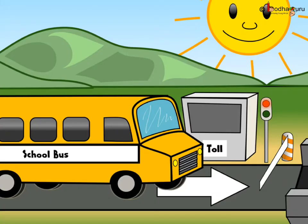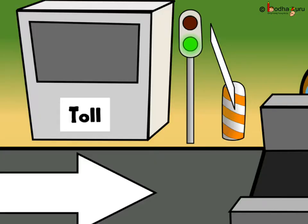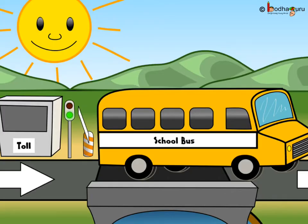Just see the gate is closed right now. So, when does it open? There is a toll booth at the starting of the bridge. One needs to pay at the toll booth and then only he can cross the bridge. Now, the gate is opened and the bus can use the bridge to reach the school at the other end.